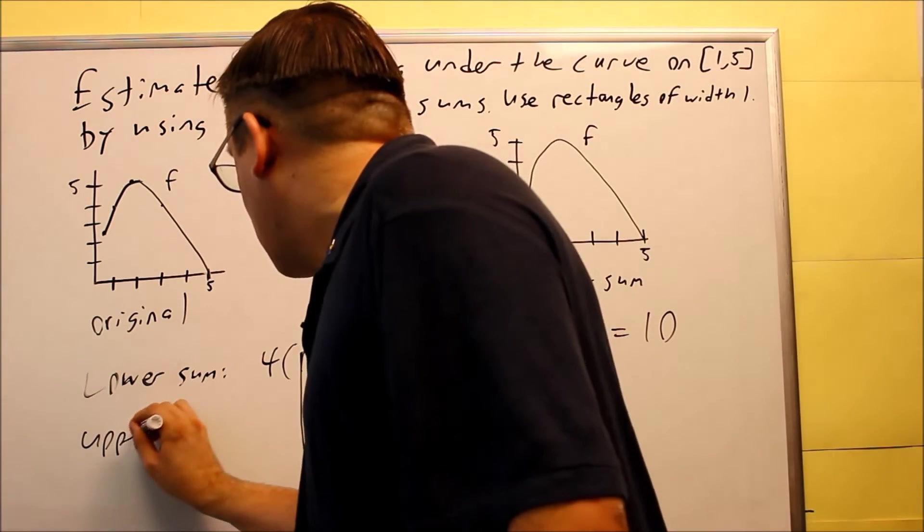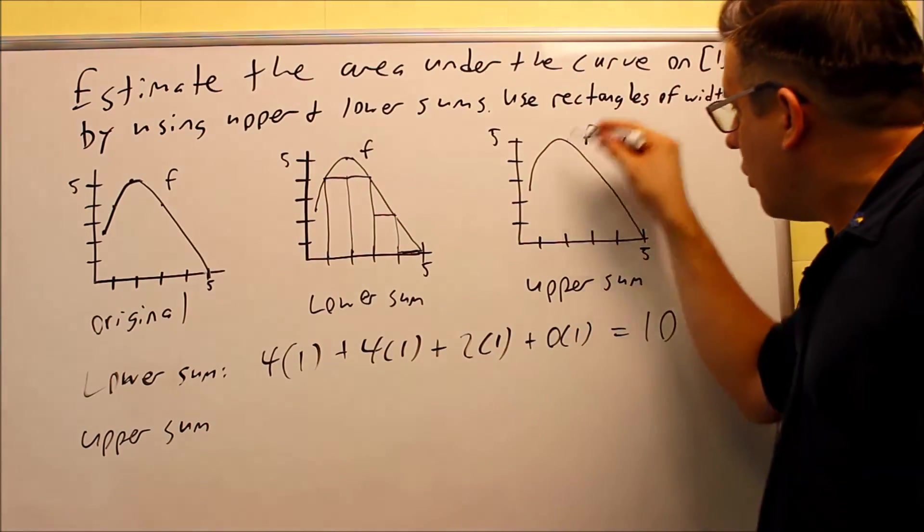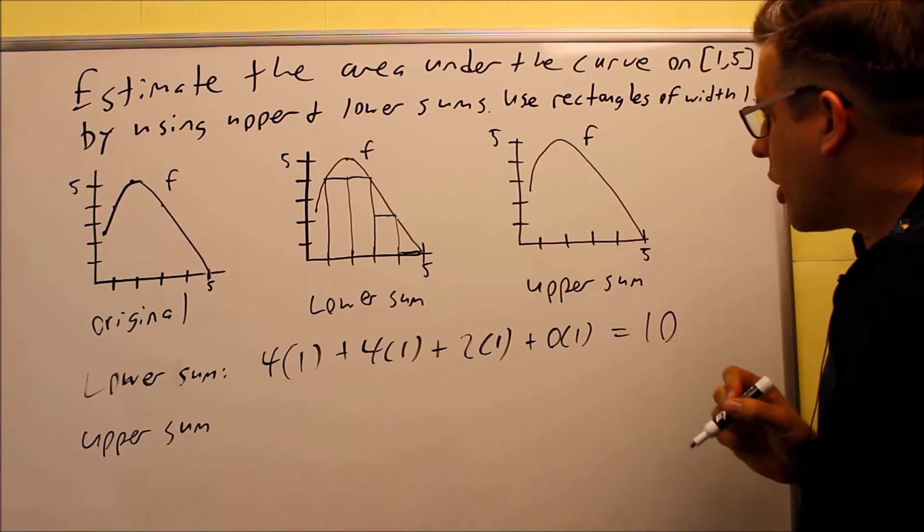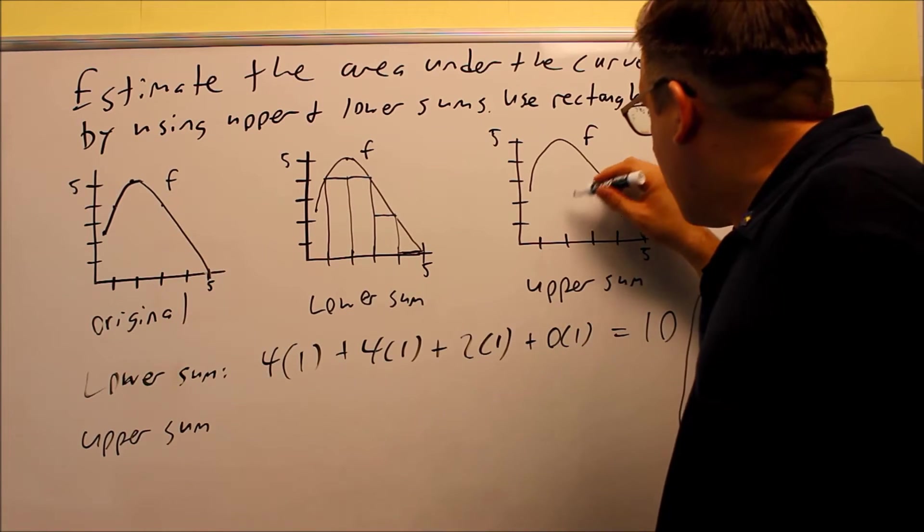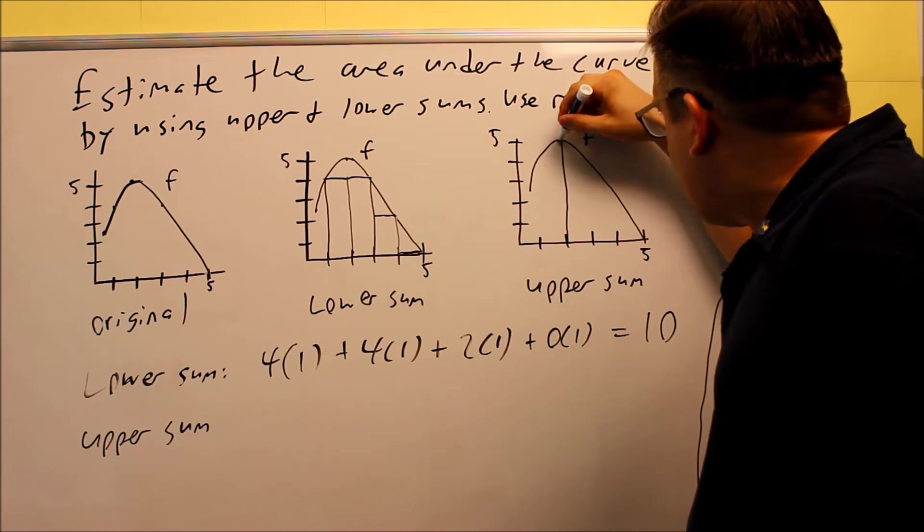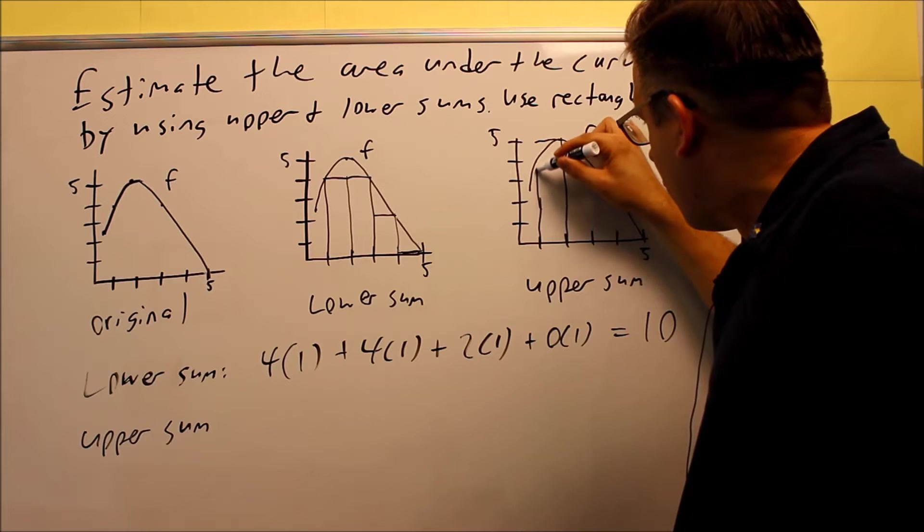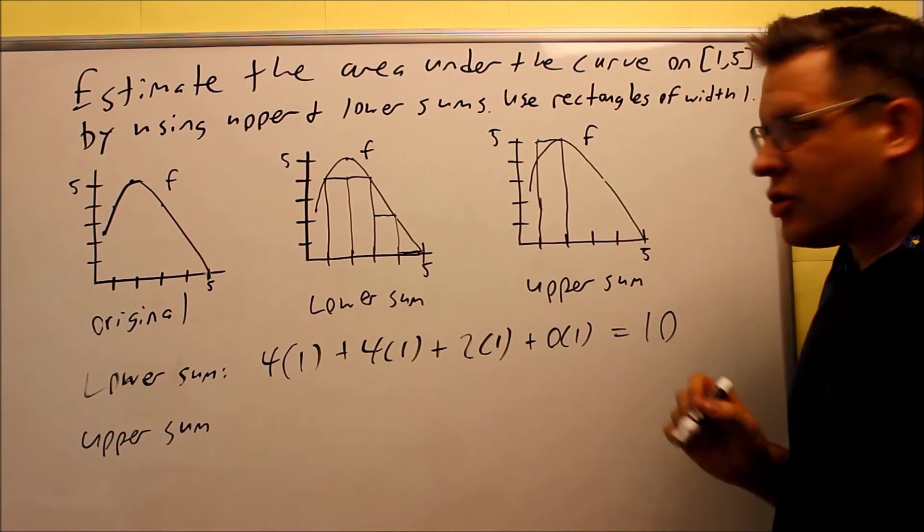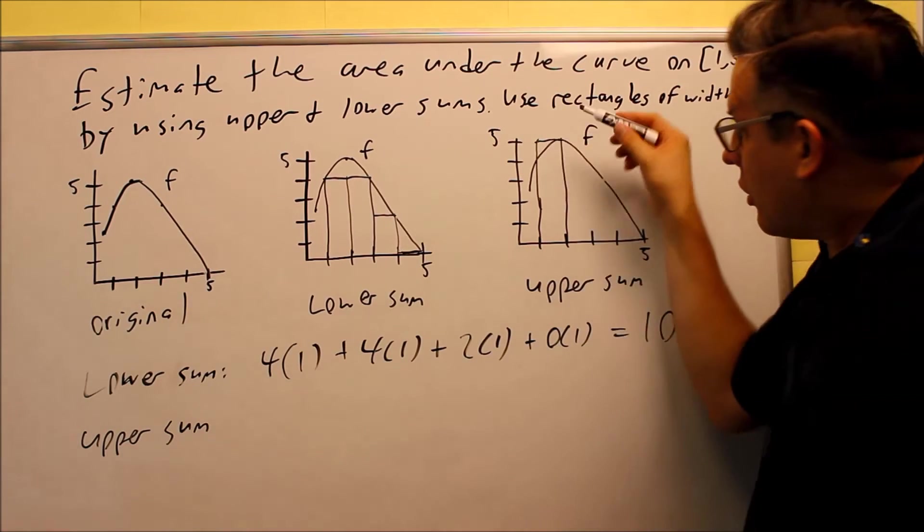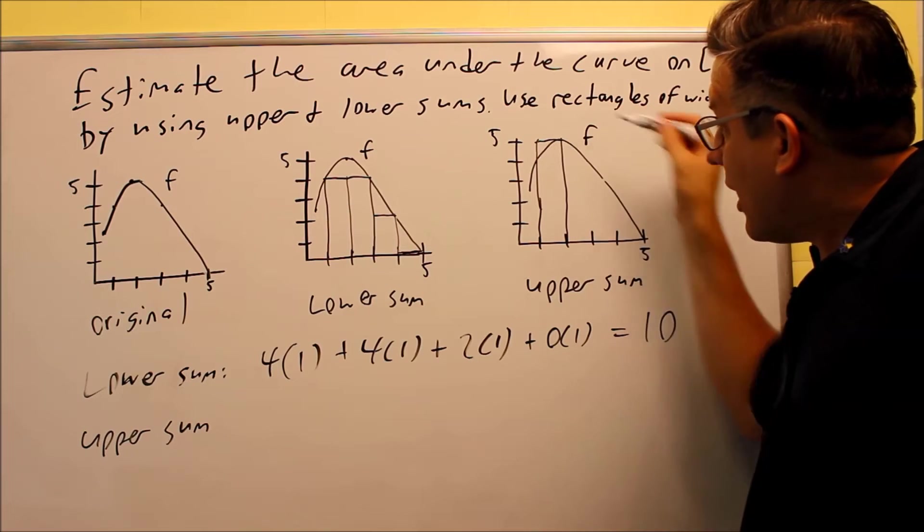So, now, we're going to do the same thing using upper sum, but before we get the numbers, we have to draw it, so that way we know the height of each of our rectangles. So, this time now, we're going to have the rectangles fall outside. So, this is the difference here when you draw it for upper sums. The rectangle is going to go outside or above the original line. So, we have that one, it's going to go up here at 5.